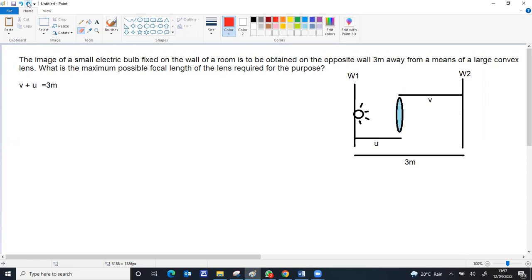So u plus v equals 3 meters, and you can get v as 3 minus u from that. Now apply the lens formula: 1/v minus 1/u equals 1/f. In this, we can substitute v as 3 minus u and apply the sign convention for u.